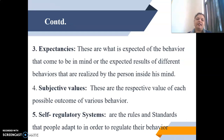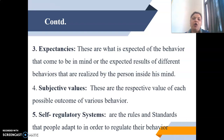A situation may be threatening for one person and challenging for another. Third is expectancies — these are what is expected of the behavior that comes to mind, or the expected results of different behaviors realized by the person. Next is subjective values — these are the respective values of each possible outcome of various behaviors. Next is the self-regulatory system — these are the rules and standards that people adapt to in order to regulate their behavior.